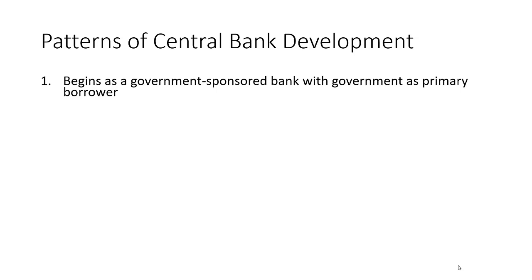What I call pattern one is a central bank that begins life as a government-sponsored or government-chartered bank, where government is the primary customer. It's a bank created by government for government to help the government with its fiscal needs. The government needs money historically, primarily to wage wars. More recently, there's defense and public policy-type needs for money, and this is a pretty prevalent theme.